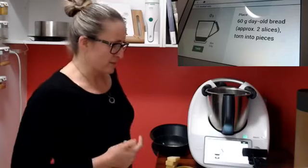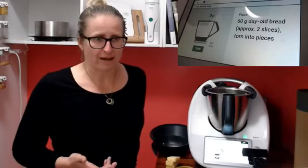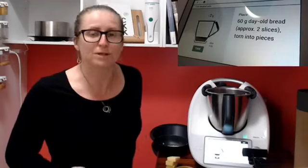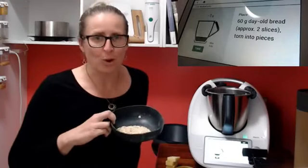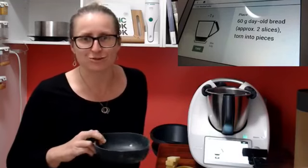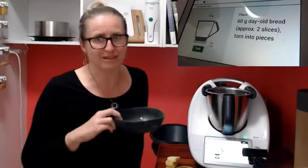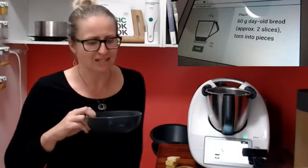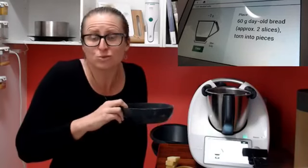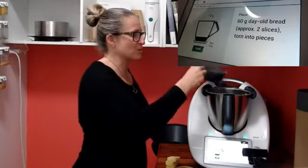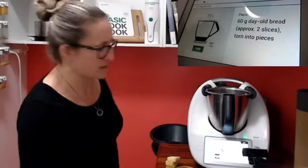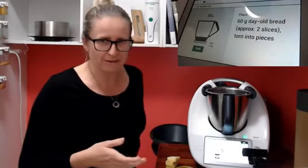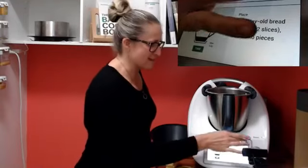So first things first is some day old bread. Now I don't have bread but I do have oats. I'm going to put in the very end of my container. We are getting rid of stuff out of the drawers and fridges and freezer and pantry. This is the end of the oats. I don't think it's 60 grams but I'm just going to use what I've got and that's the beauty of Thermomix cooking. So in that goes 30 grams. That'll do.